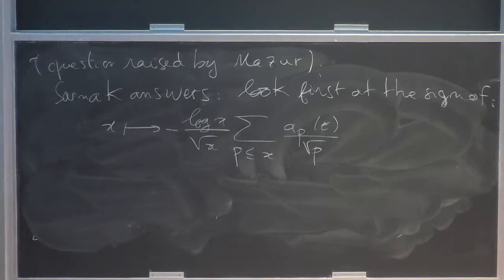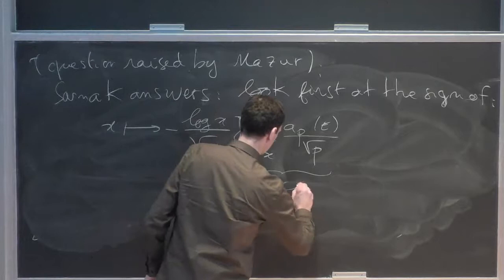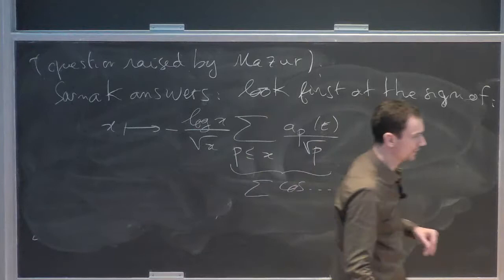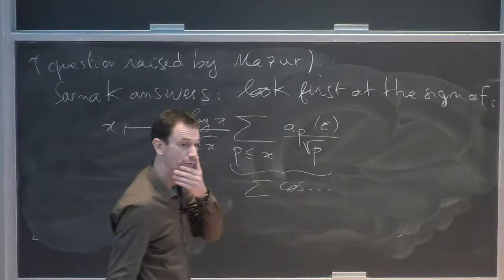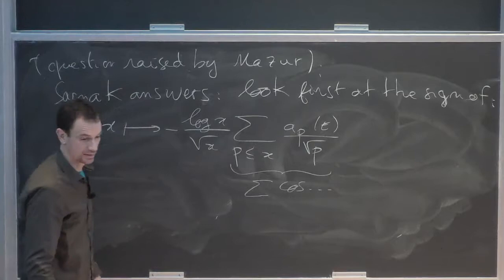So why is it easier? Because this is the sum of cosine. From the Fourier theory point of view, it's not very hard, whereas this function here is pretty much an indicator function, which from the Fourier point of view is harder to handle. And this comes from the Riemann hypothesis.